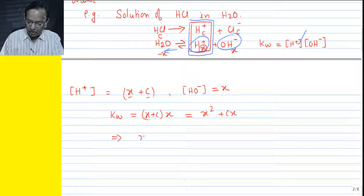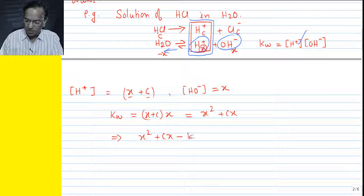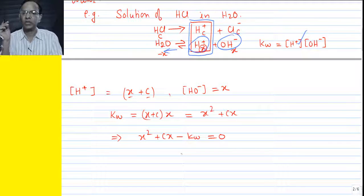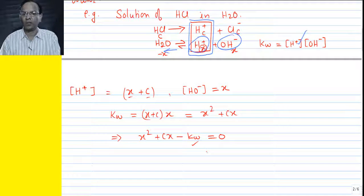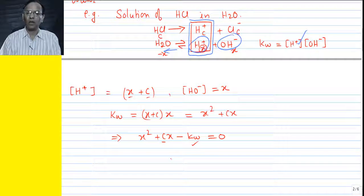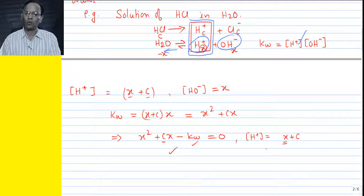So we can write X² + CX − Kw = 0, which is a quadratic equation in X. Kw is known — it is 10⁻¹⁴ at 25°C — and the concentration of acid C will be given. With the knowledge of Kw and C, X can be found. Once X is known, concentration of hydrogen ion = X + C. X is determined by solving the quadratic equation, and C is the given concentration of acid.